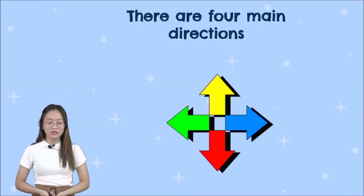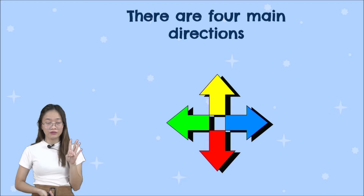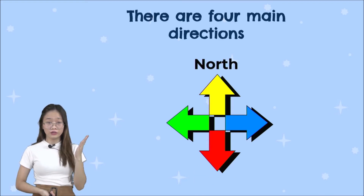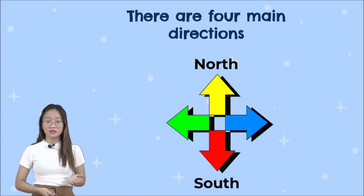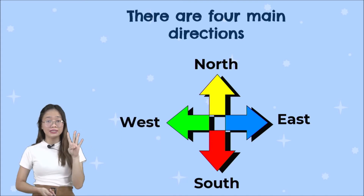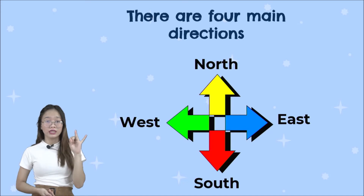There are four main directions. The first one, we have the north, the south, the east, and the west. Again, there are four main directions: north, south, east, and west.